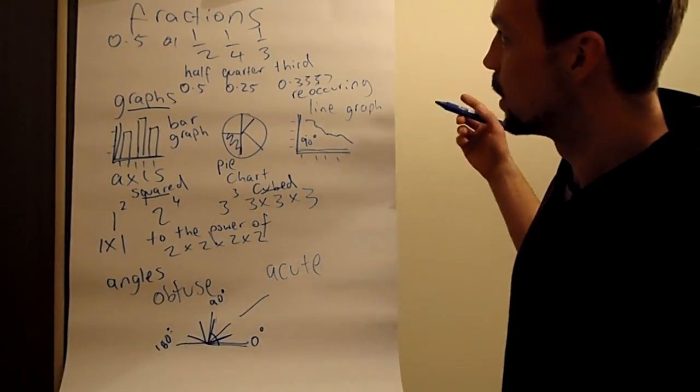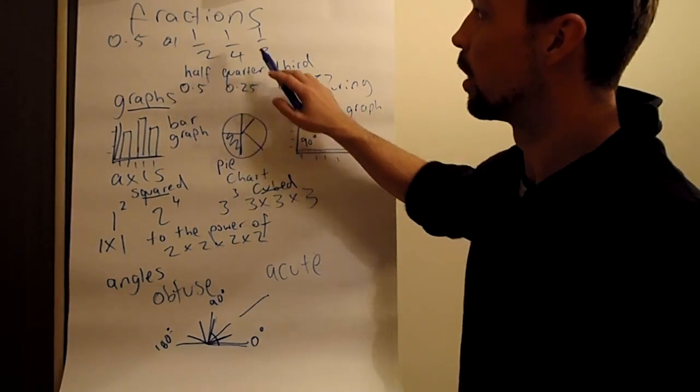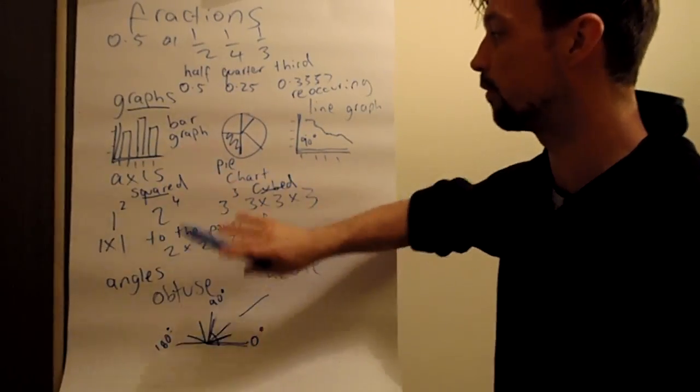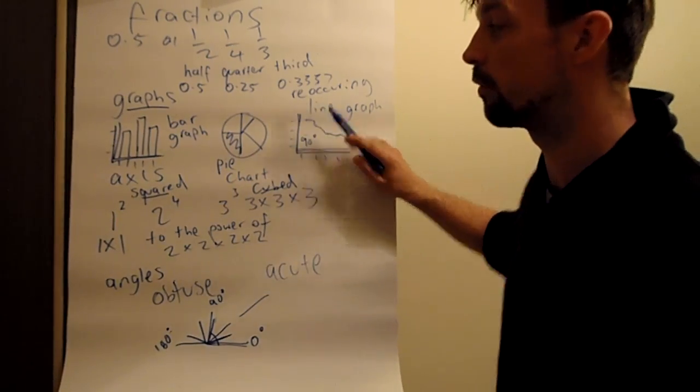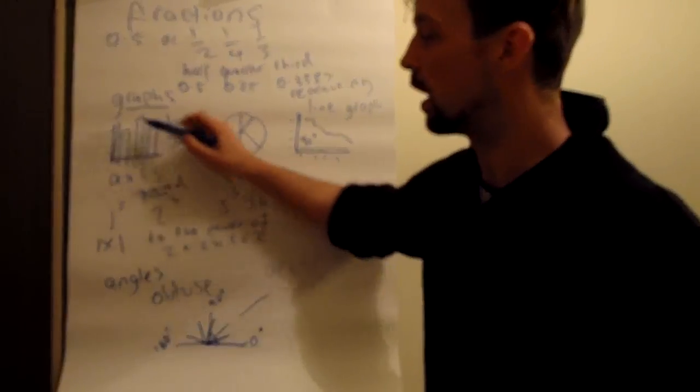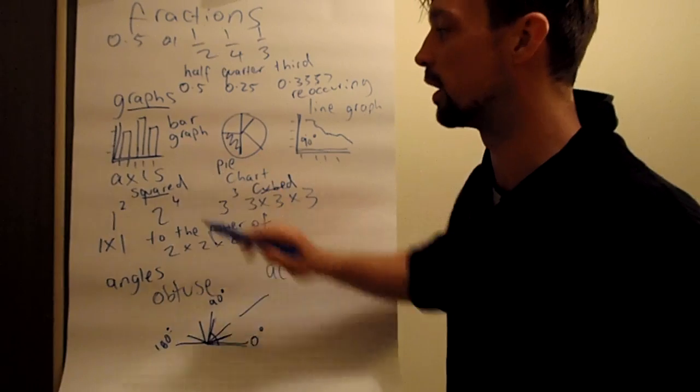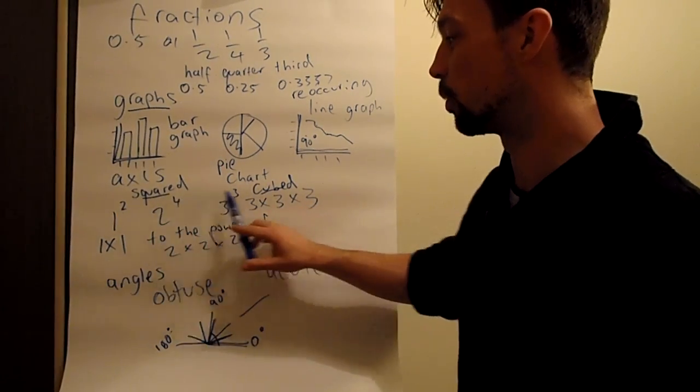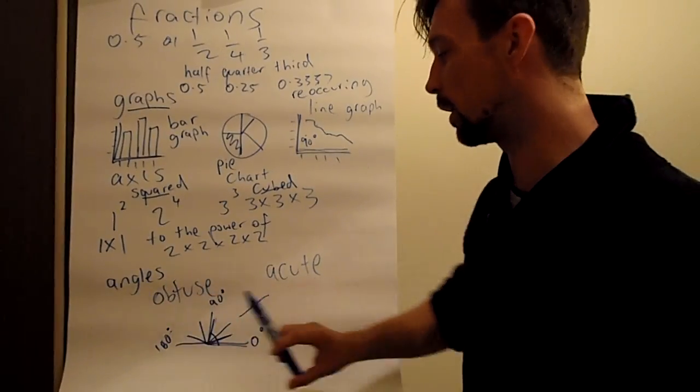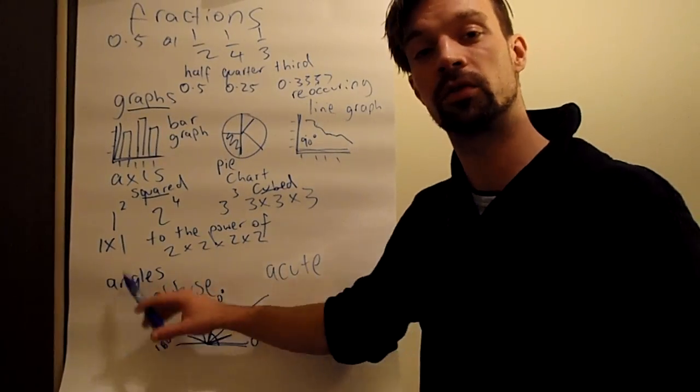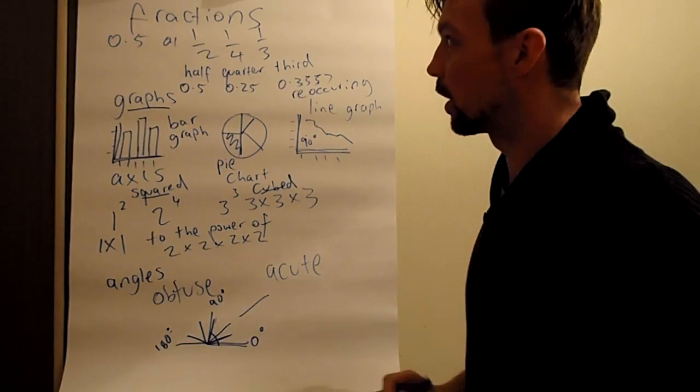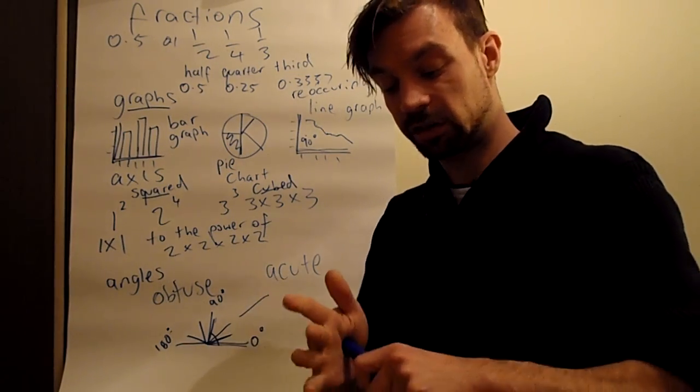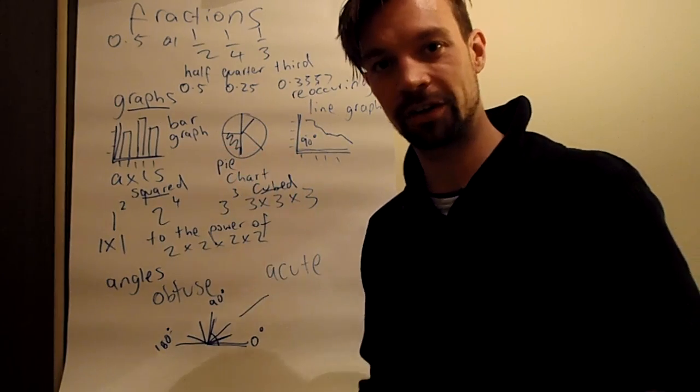Okay, so we have fractions: we have half, quarter, third, we have 0.5. We have graphs: we have a bar graph, a pie chart, a line graph, and the axis on the vertical and horizontal. We have squared, to the power of, and cubed. We have obtuse and acute angles. Okay, this is it for the intermediate lesson. I shall see you in another lesson. Okay, have a nice day, bye bye.